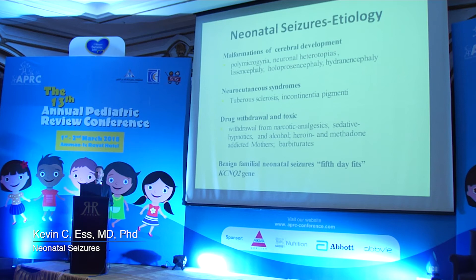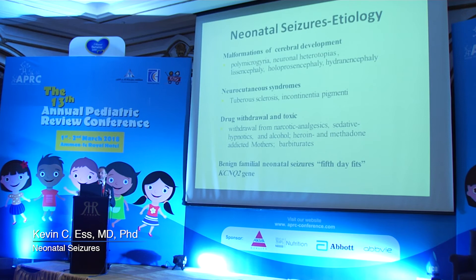Other causes of neonatal seizures include dysgenesis of the brain—the overall name for malformations of cerebral development. It should not be surprising that if your brain did not form normally, you can have seizures as a result. Examples include various types of cerebral malformations: polymicrogyria, heterotopias, or abnormalities of neuronal migration. Lissencephaly, or overall smooth brain, and holoprosencephaly are very early genetic conditions where the brain simply failed to form. These generally have fairly poor outcomes, whereas patients with polymicrogyria and heterotopias will have epilepsy but may not have severe developmental anomalies.